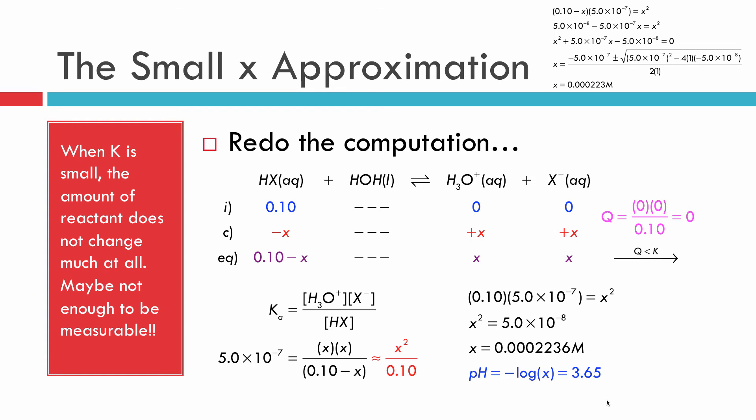So the question is, if this works, does it always work? Because we want to make sure that we're using it when we can. Is x always going to be small enough that we can ignore it? So let's play around with this a bit. We're going to look at the two things that can change. What can change is our equilibrium constant and this initial value of our concentration. Those are our two parameters that can change. So let's see when our approximation, our small x approximation, is applicable.